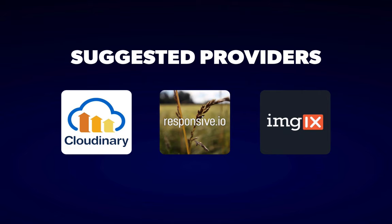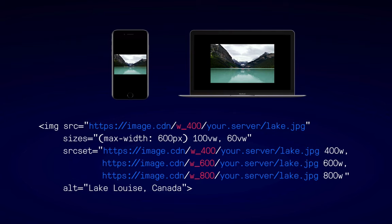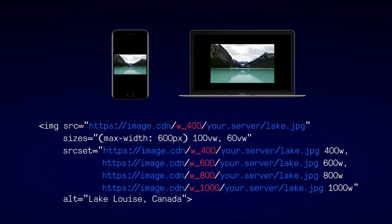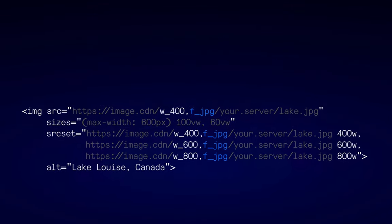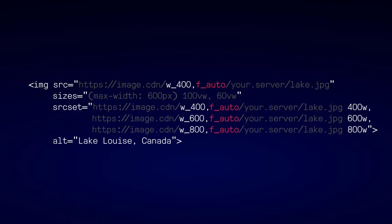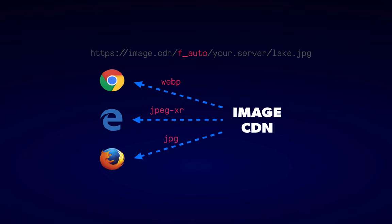If we take our srcset example from before, instead of having to generate each image we can simply ask our image CDN for the sizes we want. Adding or changing one of the sizes is really simple, whereas before we would have had to reprocess every image on our site. Most providers support an automatic image format where the CDN determines the best format to send each browser based on the user agent in the request. For Cloudinary, that format is called f_auto. The image CDN simply needs to invest the time in keeping their user agent list up to date, which as part of their core offering is a reasonable expectation.